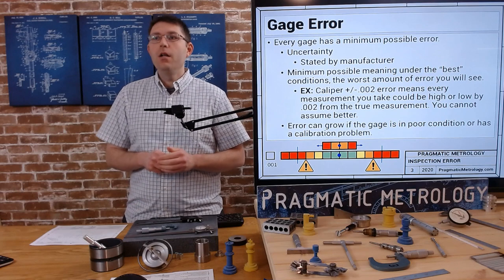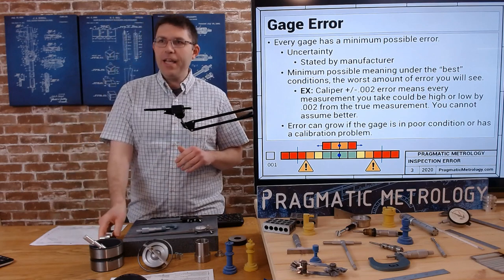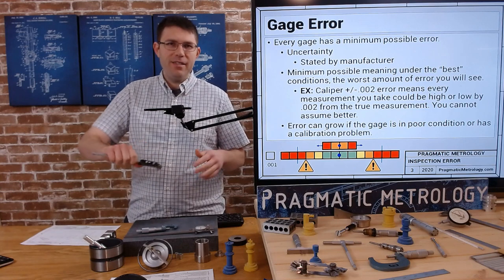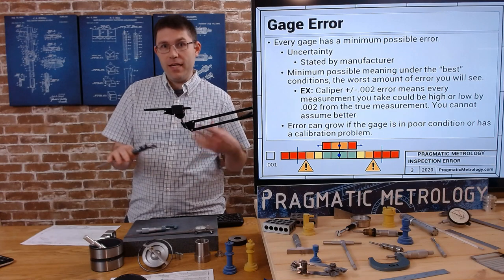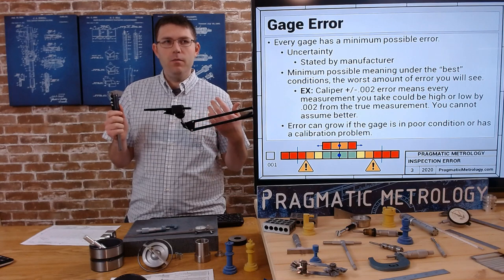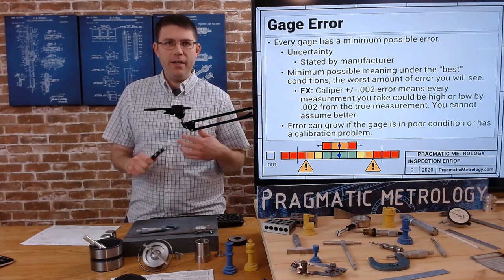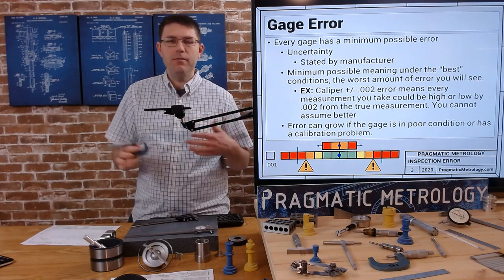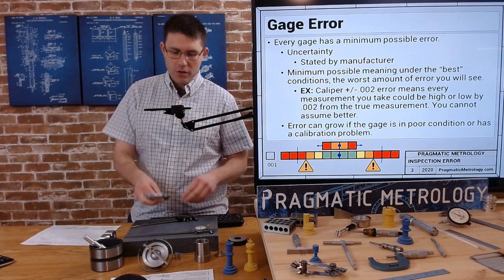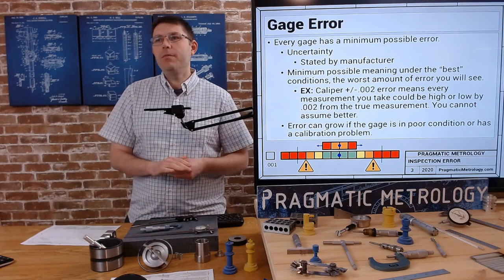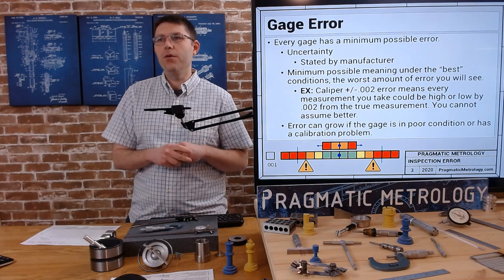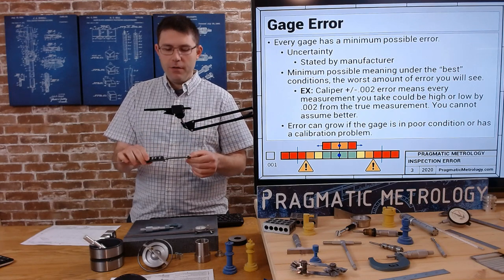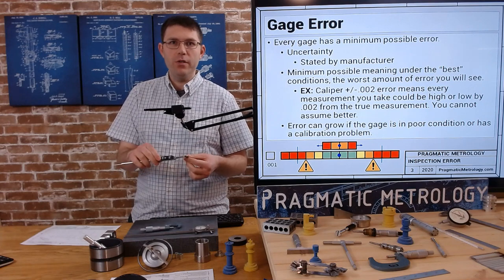Every gauge has a minimum possible error. With a caliper, every reading you take is basically plus or minus 1 thousandth or plus or minus 2 thousandths. That's the accepted accuracy of a caliper. With a micrometer, it's plus or minus 1 thousandth. Those numbers vary based on manufacturer and size of the gauge. The minimum possible means under the best conditions, the worst amount of error you will see. You could see more error than plus or minus 1 with a caliper if you have bad technique or a gauge in poor condition, but you're not going to see better than that.